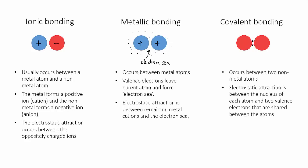Covalent bonding occurs between two non-metal atoms. The electrostatic attraction here occurs between the nucleus of each atom and the two bonding electrons which are shared between the two atoms.